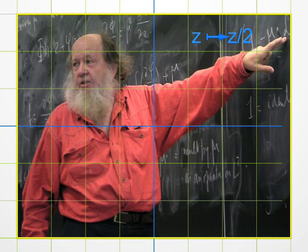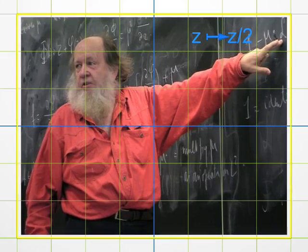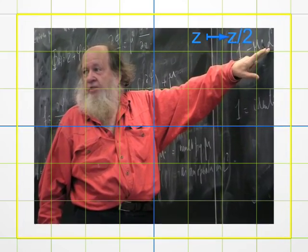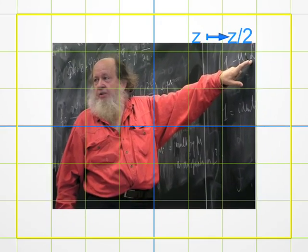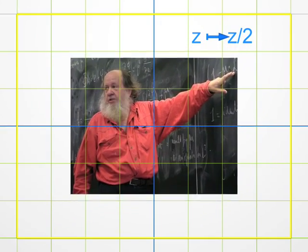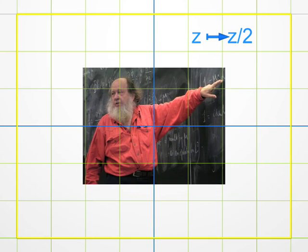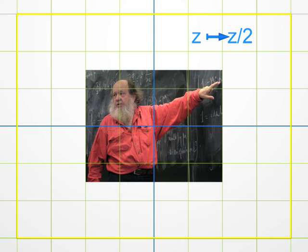Let's begin with something simple. The transformation z goes to z over 2. Each point on the photo corresponds to a complex number z that's divided by 2. We get another point, its image by the transformation, hence a new picture.